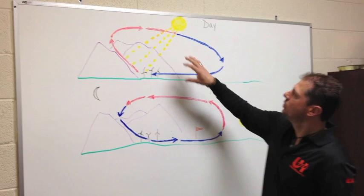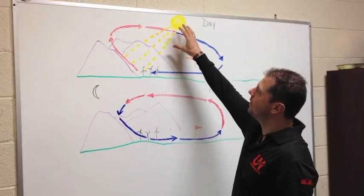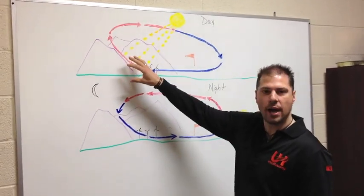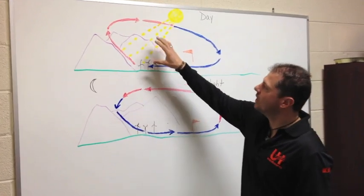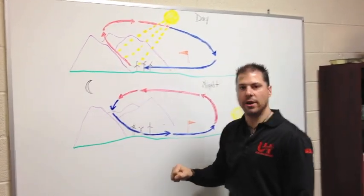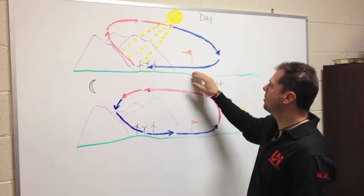During the daytime, the energy from the sun is going to be a little stronger at the higher altitudes, and so it's going to heat the surface in the mountain areas a lot faster than it is in the valley.